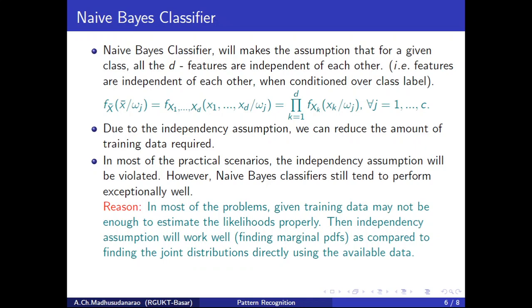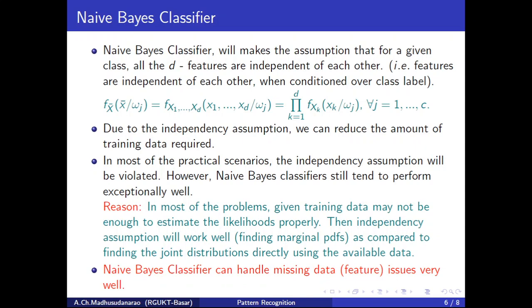Instead, it is better to assume all features are independent and find the marginals, then find the giant distribution as a product of marginals. This approximation might be slightly better compared to that bad giant PDF estimation with limited data. That's why in most practical scenarios, even though features may not be independent, this approach will work out better than direct giant PDF estimation with limited data. If you have a very huge amount of data, then direct giant distribution estimation looks good compared to finding marginals and doing product of marginals.